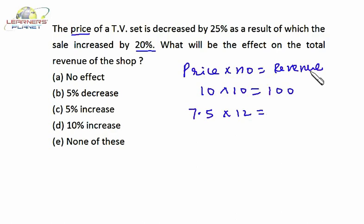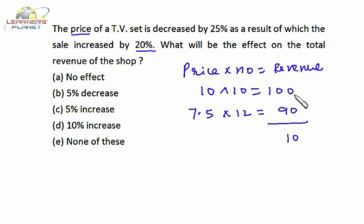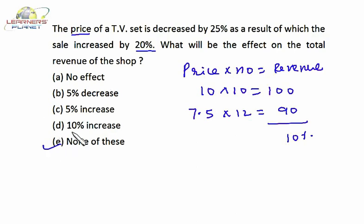12 into 7.5 is 90. So it's a 10 percent downfall in the revenue. I hope you are clear.